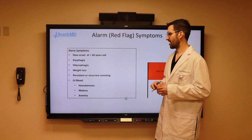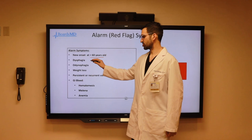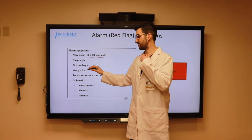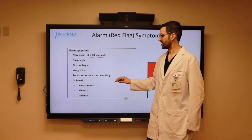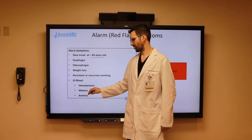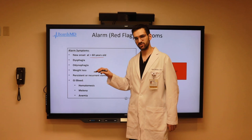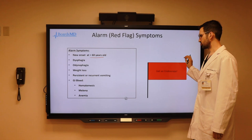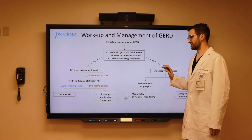Alarm symptoms in a patient with GERD-related symptoms include: new onset of symptoms at greater than 60 years of age, dysphagia (difficulty swallowing), odynophagia (pain while swallowing), weight loss, persistent or recurrent vomiting, and GI bleed — which can include hematemesis, melena, or anemia. If we see any of these alarm symptoms in a patient with reflux symptoms, these are red flags and we should absolutely obtain an endoscopy. This leads us to the ultimate algorithm for management of patients with GERD.